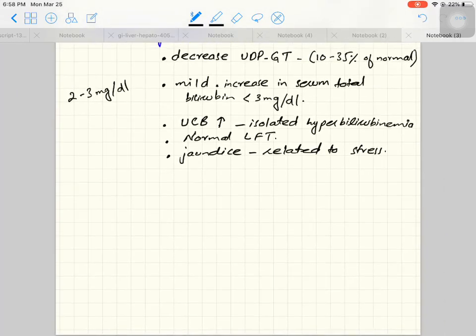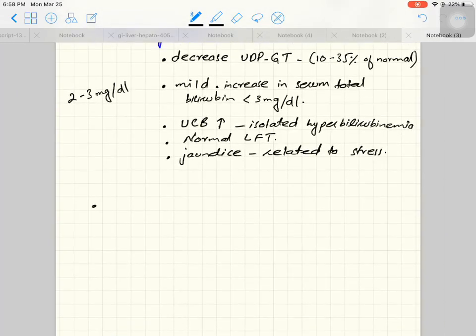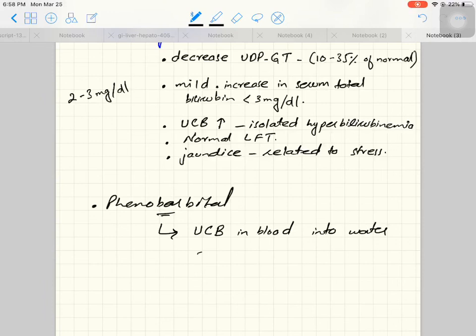In this condition, the treatment is phenobarbital, a sedative and hypnotic drug. Phenobarbital converts the unconjugated bilirubin in blood into water-soluble form, which is then excreted in urine. So phenobarbital helps in clearance of unconjugated bilirubin.